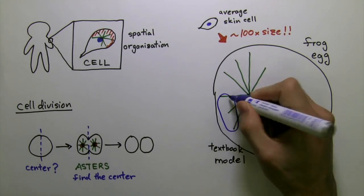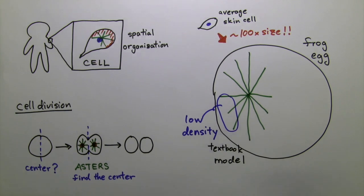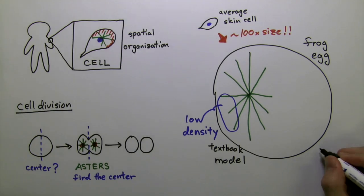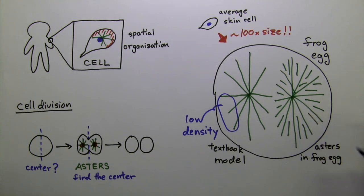Due to the radial geometry of asters, we expect a low density of microtubules at the periphery. However, the asters inside frog eggs look quite bushy. How can we explain this?